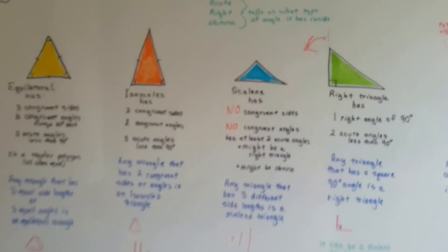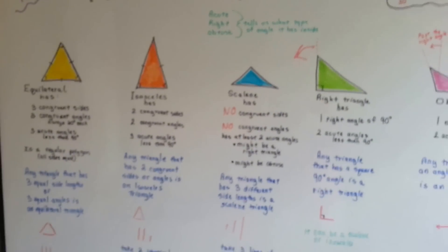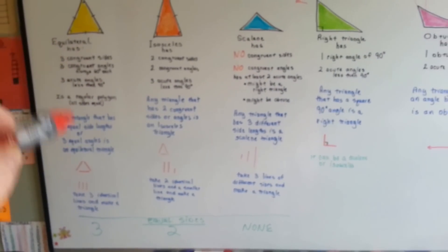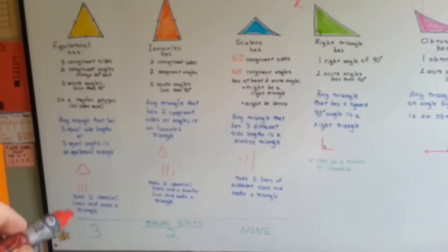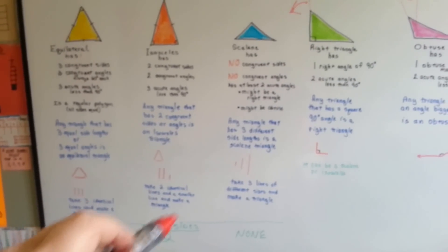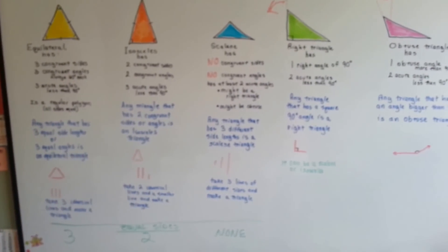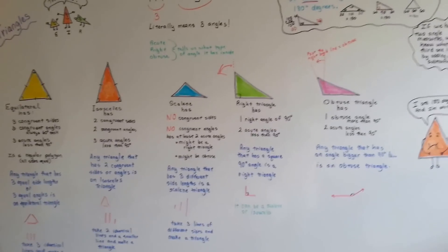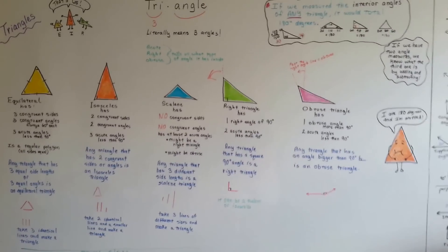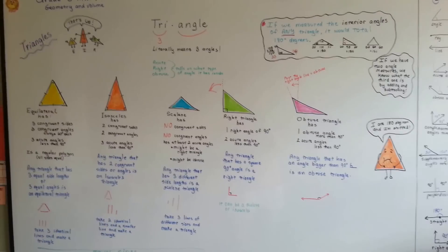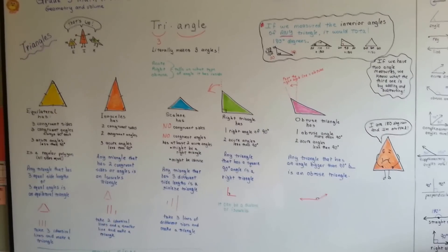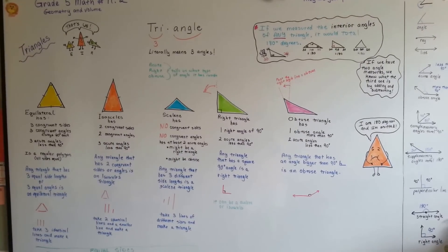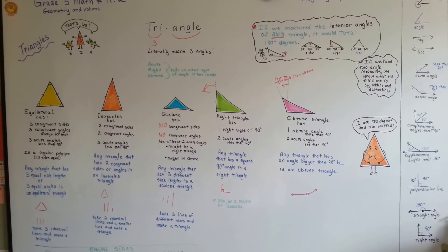When you look at the equilateral, isosceles, and scalene triangles together, you can see that the equilateral has three equal sides, the isosceles has two, and the scalene has none. Maybe you can use this to do your homework — pause it or freeze frame it. We're going to talk about quadrilaterals next, and I hope this was helpful. I'll see you next video!